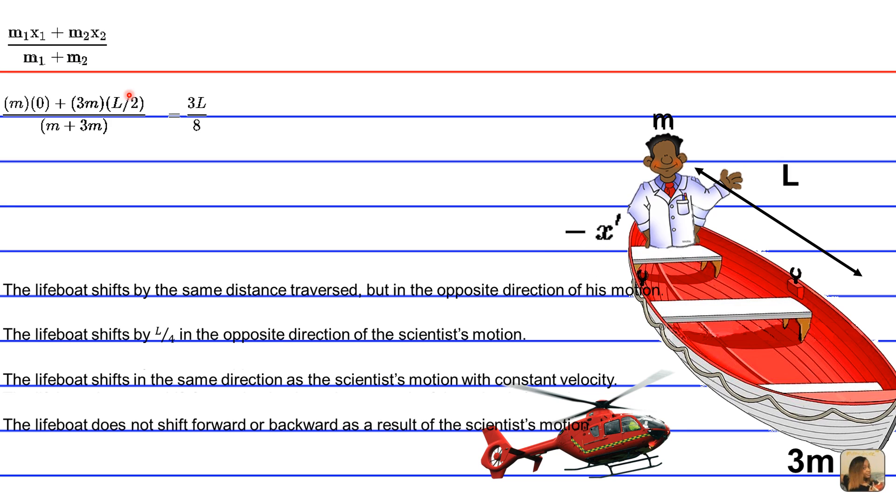So now what you're going to do is find the center of mass for his second position. And we're assuming that the boat shifted a distance of x prime. That's the variable name we're going to give the boat shift. But it's going to be in a direction opposite the scientist.